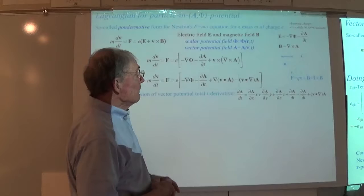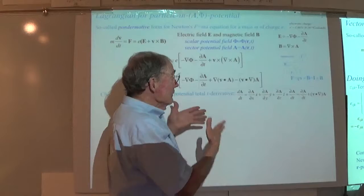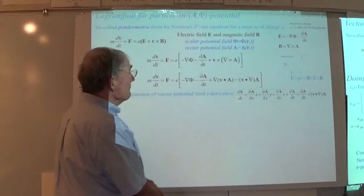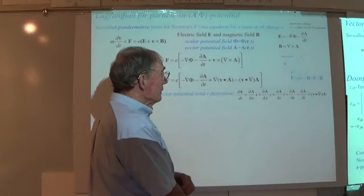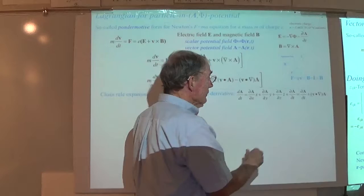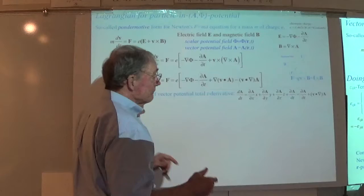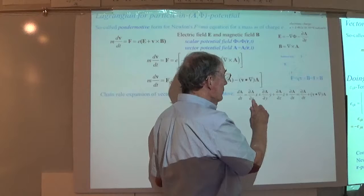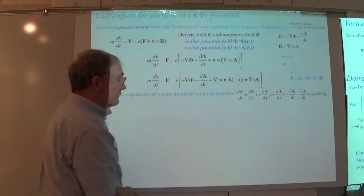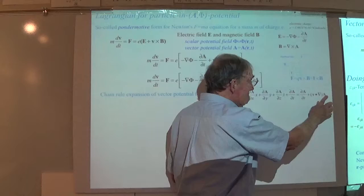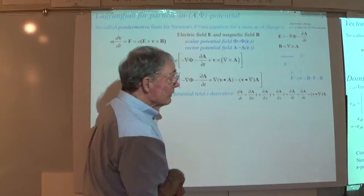What we immediately do to get this started is take the total time derivative of the vector potential field as a chain rule expansion in all four variables — including time. We're going to allow A to be an explicit function of time, so we need that fourth term as well as the spatial dependencies of the vector potential. What we end up with is V·grad(A) plus that explicit time dependence.